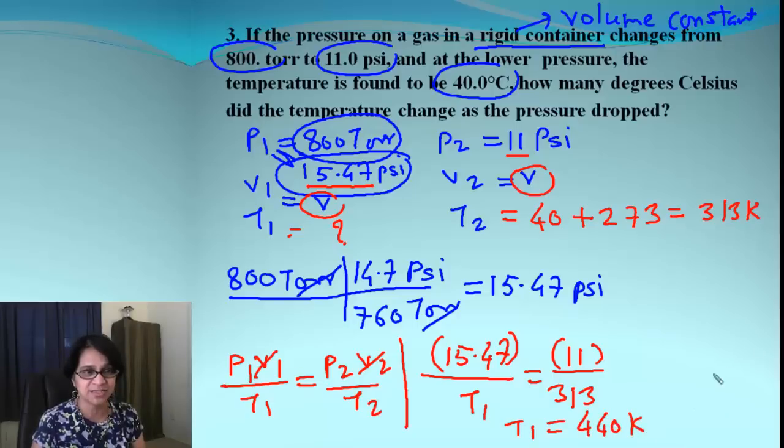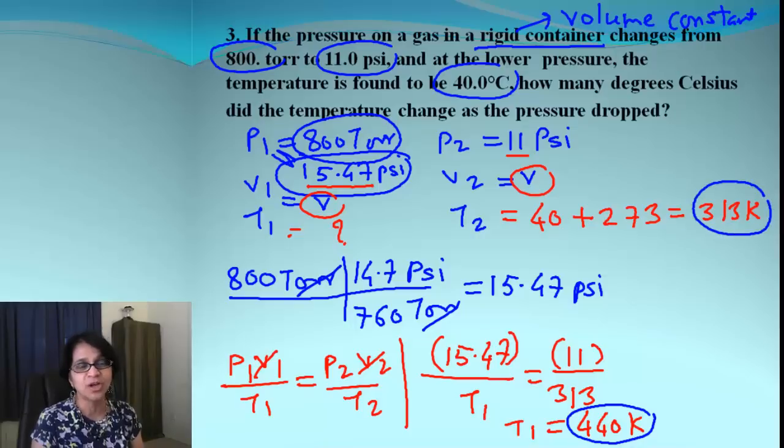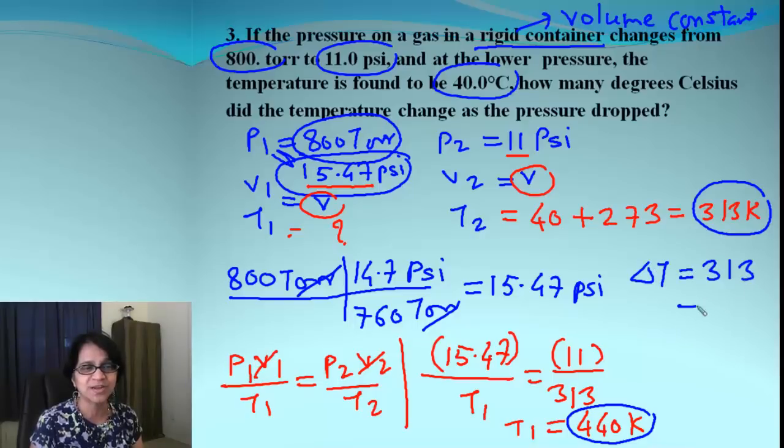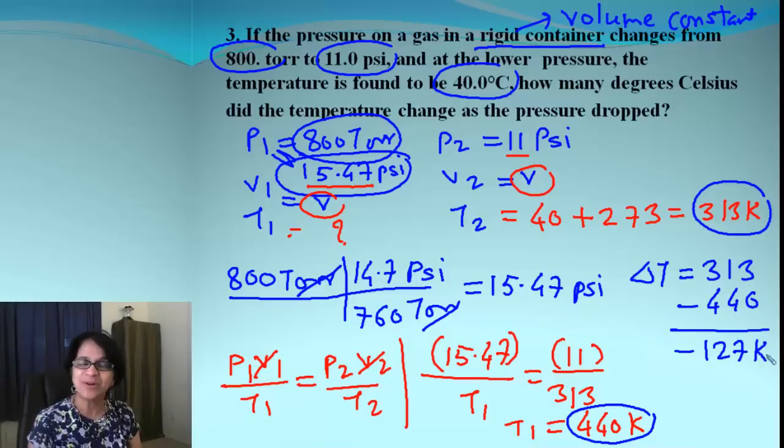Now keep in mind that is T1. What we need to find out is how much the temperature dropped down from 313 Kelvin. So that delta T, the change, will be 313 minus 440. And that will be equal to negative 127 Kelvin.